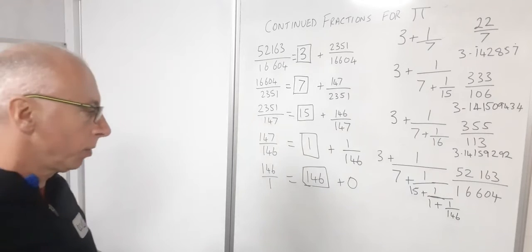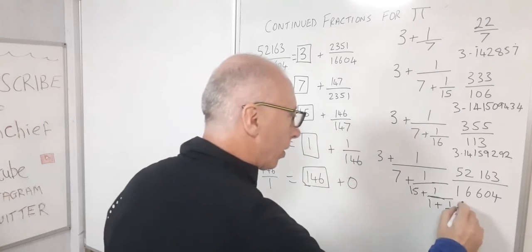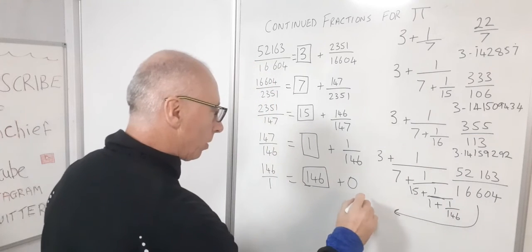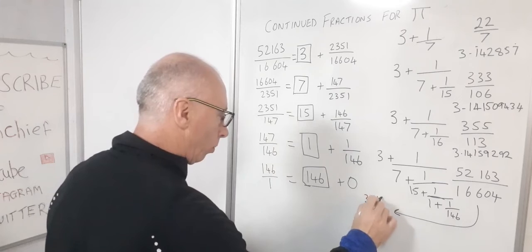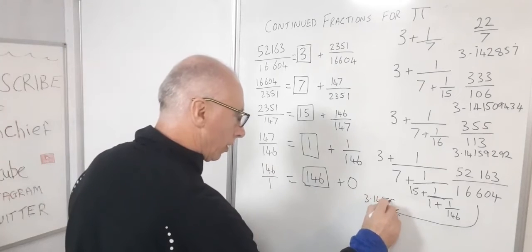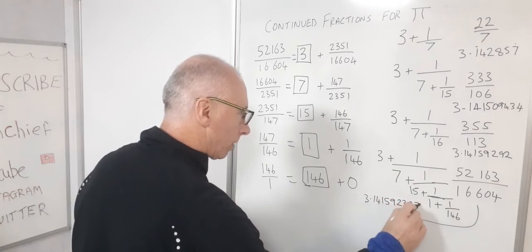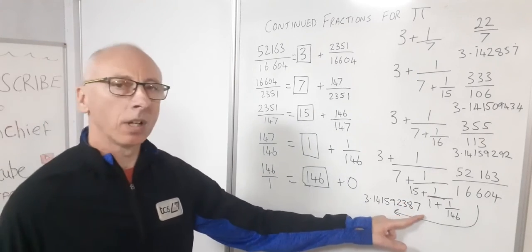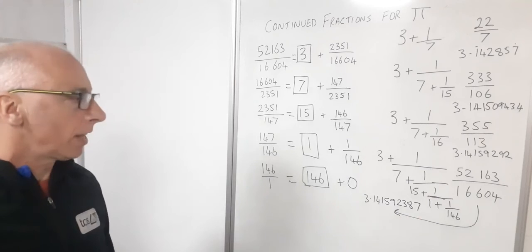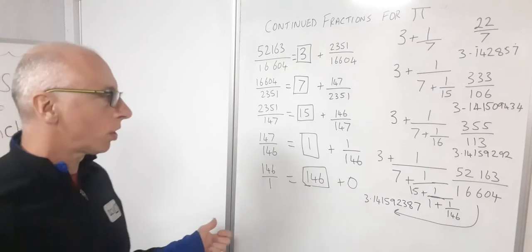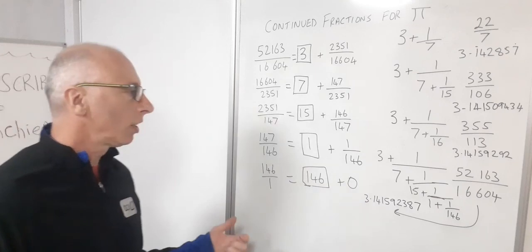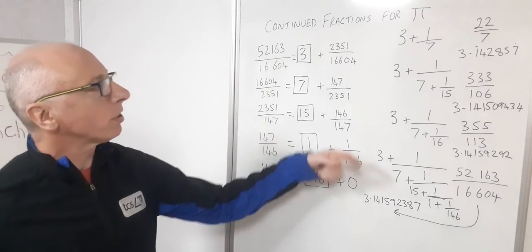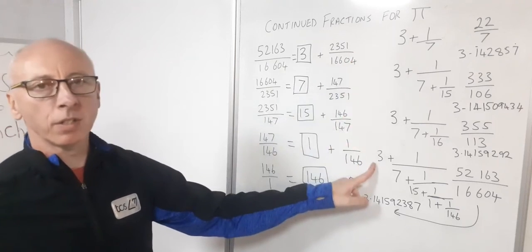And as a decimal, so this one is now, let's write it down here as a decimal. You've got 3.141592387. So we can see this is starting to develop now a lot closer. And then there are other approximations for pi we can use involving the arc tangent, which I could show you in the next video. But this is where we are so far for continued fractions and using the approximations of pi.